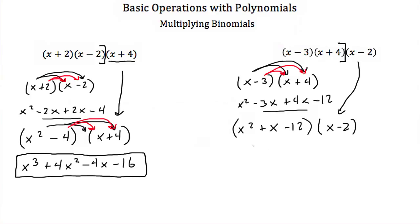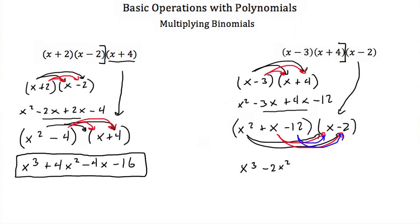Every term in x squared plus x minus 12 gets multiplied by both terms in x minus 2. So x squared times x is x cubed, x squared times negative 2 is negative 2x squared, x times x is positive x squared, x times negative 2 is negative 2x, negative 12 times x is negative 12x, and negative 12 times negative 2 is positive 24.